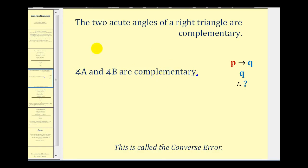If we wanted to write this as an if-then statement in the form of if P then Q, P would be that we have two acute angles of a right triangle, and Q would be that the angles are complementary. Notice how we're given A and B are complementary, so we're actually given Q. So what we're considering here is if we know P then Q is true, can we conclude something knowing that Q is true?